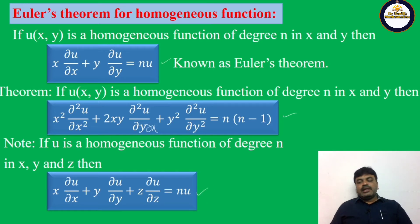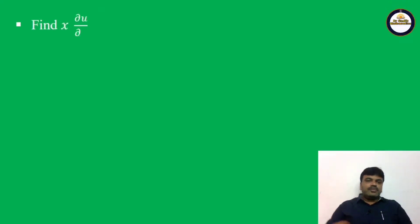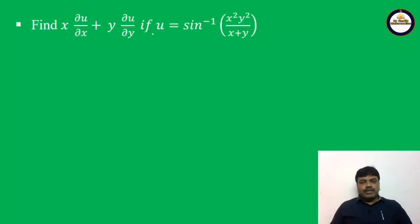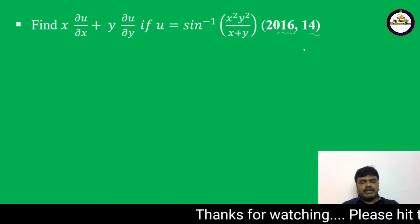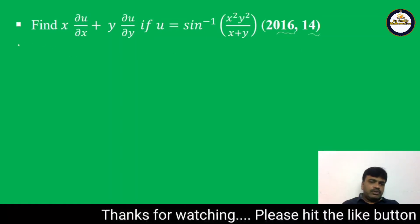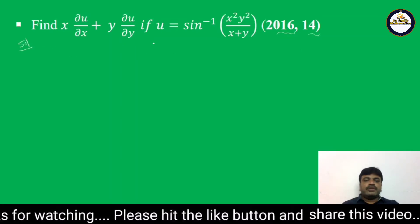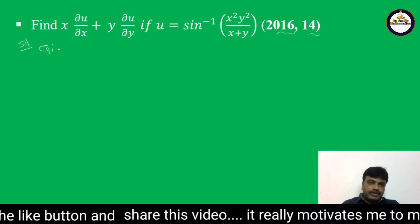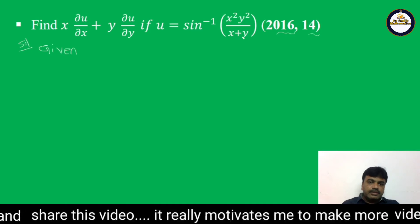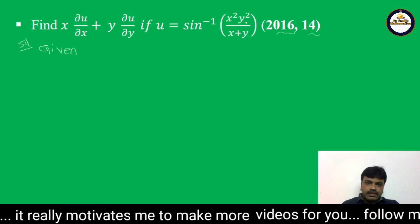Let us see one problem on Euler's theorem. Find x·∂u/∂x + y·∂u/∂y if u is equal to sin inverse of x²y²/(x + y). This is a very important problem. Solution: we can write sin u = x²y²/(x + y).